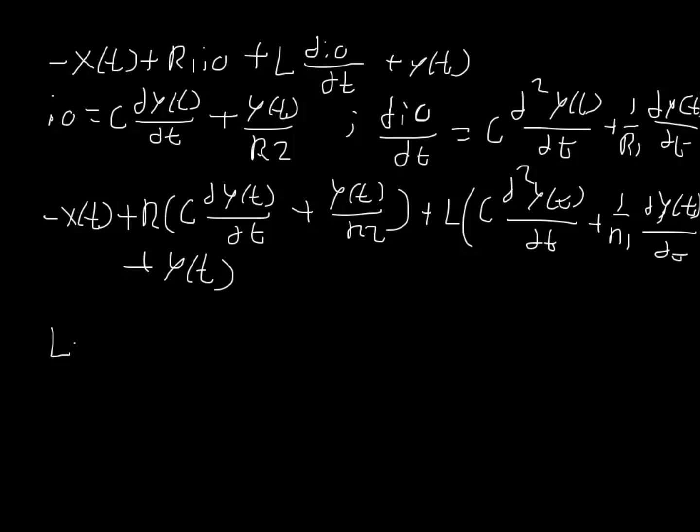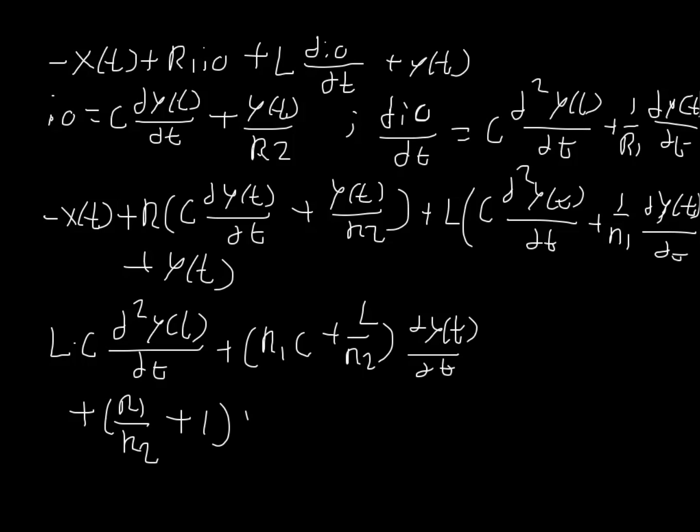It's just l times c d squared y of t dt plus the quantity of r1c plus l over r2, dy of t dt. I'm not going to start a new line because I'm about to run out of room on that right side. Plus the quantity of r1 over r2 plus 1 of y of t is equal to x.